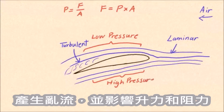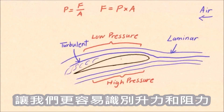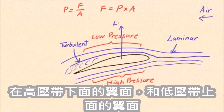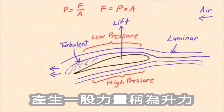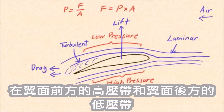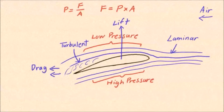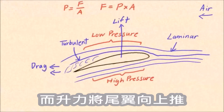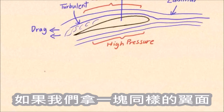Now that the high and low pressure areas are labeled, it is easy to identify the forces of lift and drag. The high pressure area below the wing and low pressure area above it creates a force called lift. The high pressure area at the front of the wing and a low pressure area at the back creates a force called drag. Drag pushes the wing backwards while lift pushes the wing upward.